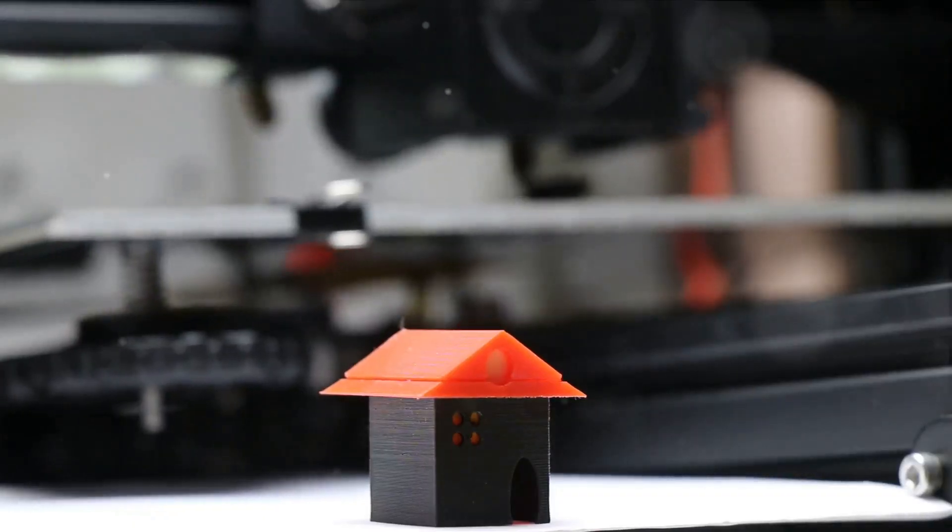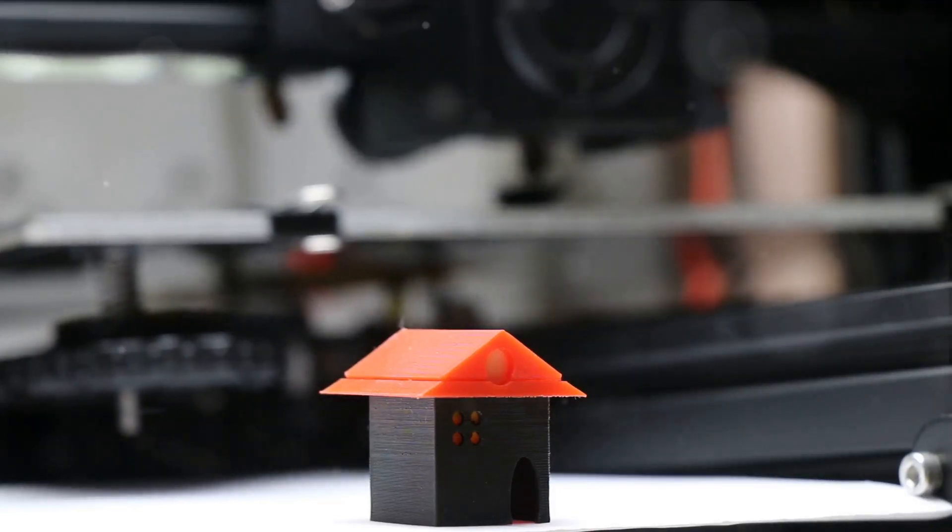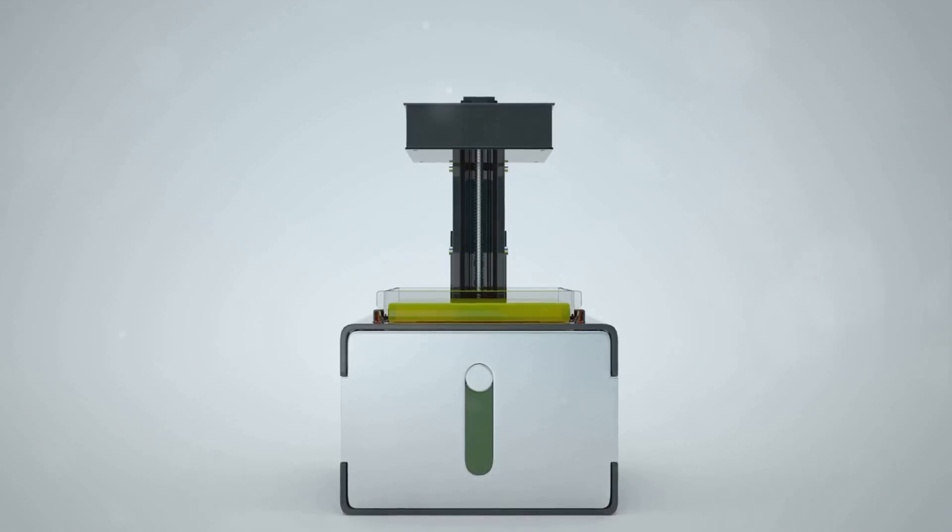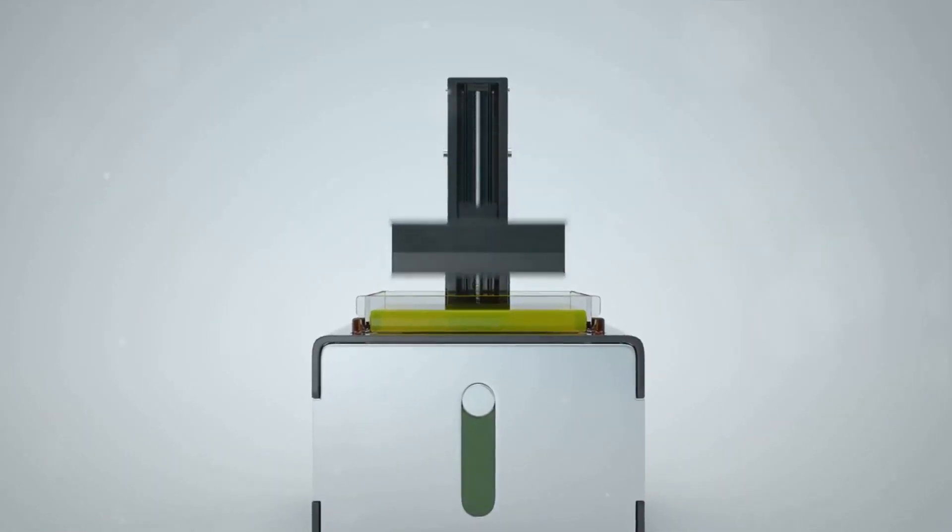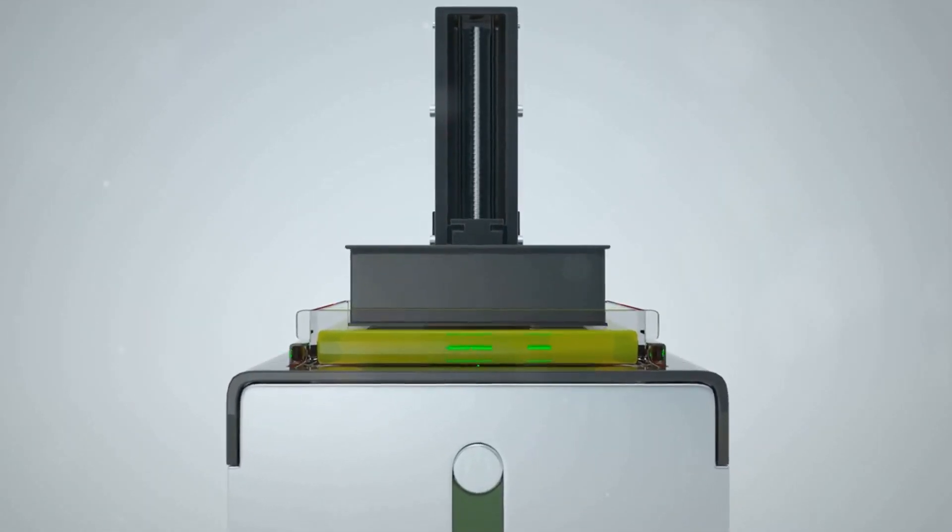Picture this: a small town in Italy named Massa Lombarda, faced with a housing crisis. Traditional construction methods would take years and a significant financial investment to solve the problem. But thanks to 3D printing, the town witnessed a transformation that was nothing short of a technological marvel.